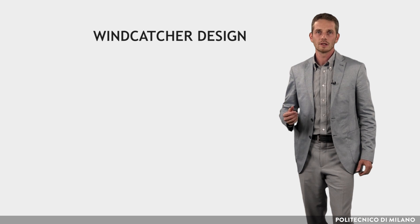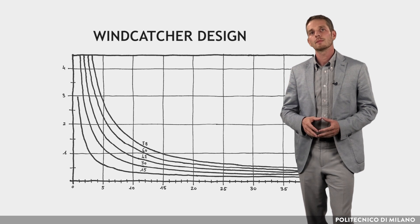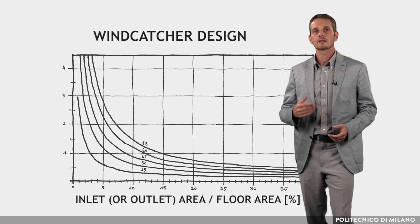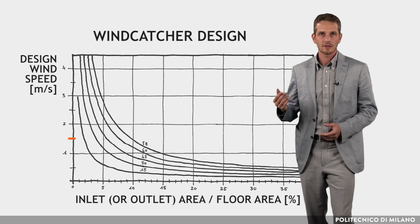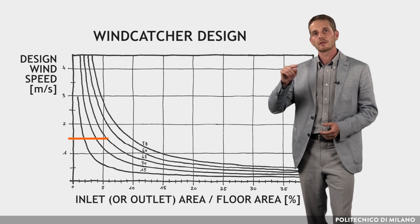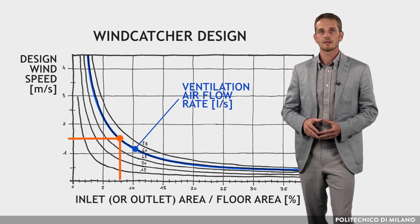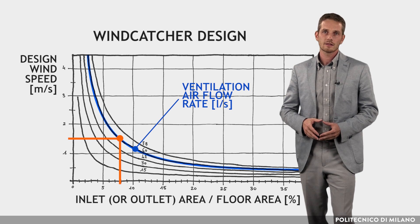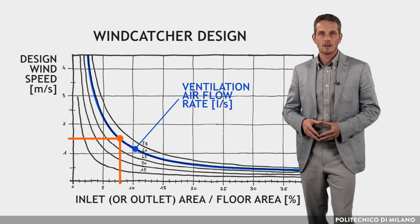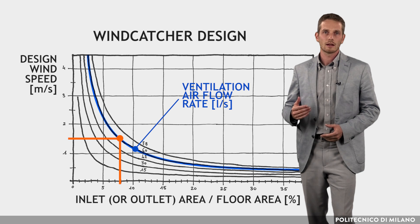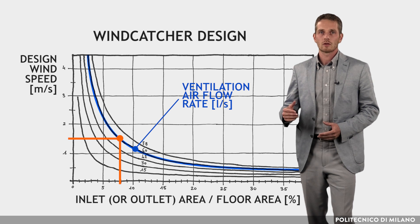When designing a new building, the size of the wind catcher opening required to achieve a given airflow rate can be determined from a graph as a percentage of floor area. As we can see here, one can enter the design wind speed on the vertical axis of the graph, move horizontally until the curve of the required ventilation airflow rate is intercepted, then drop to the horizontal axis to read the size of the inlet as a percentage of floor area. The graph is based on an incident wind angle of between 0 and 40 degrees to the wind catcher opening.